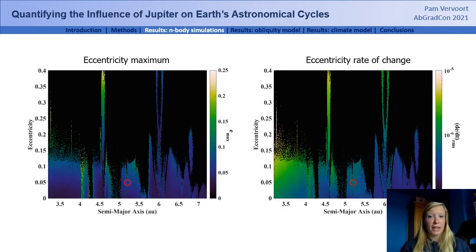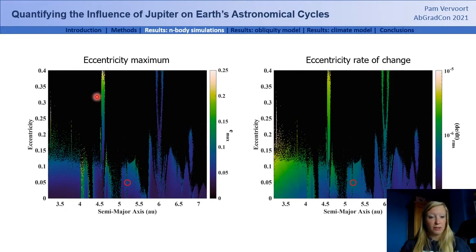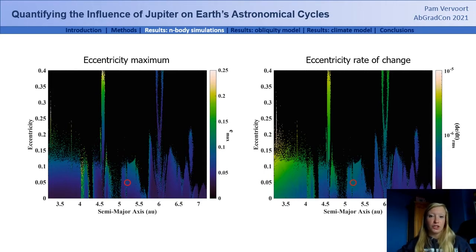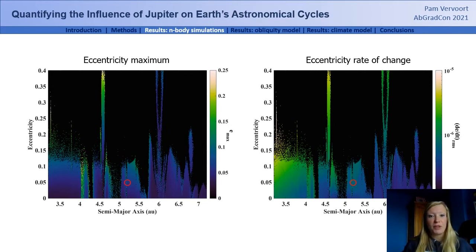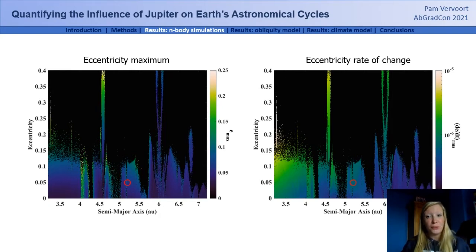In these figures, the black regions indicate unstable simulations. Some of these regions — for instance around 4.5 AU and 6 AU — are regions where Saturn and Jupiter are in resonance, which allows for a much wider range of stable configurations. There are also regions of instability; for instance, if Jupiter had been slightly more inward than 5 AU, the solar system would have become dynamically unstable.